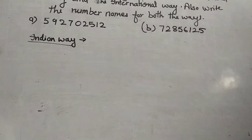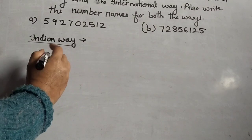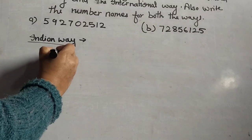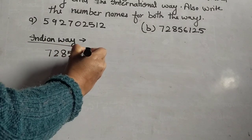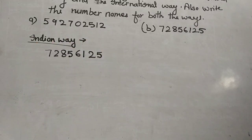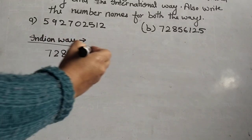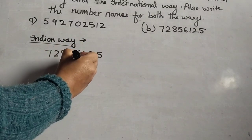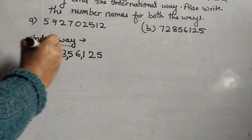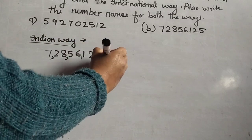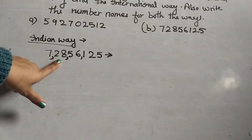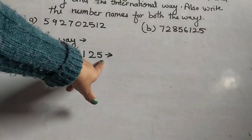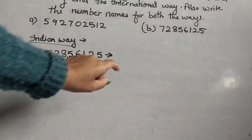Now the next number in the Indian way: 7 2 8 5 6 1 2 5. Placing commas in the Indian way — ones, tens, hundreds, thousands, ten thousands, lakhs — it is read as: seven crore, twenty-eight lakhs, fifty-six thousand, one hundred and twenty-five.